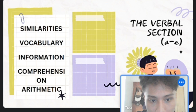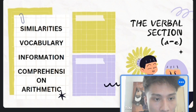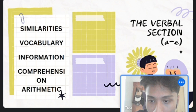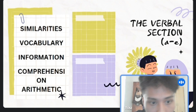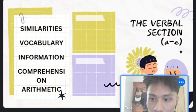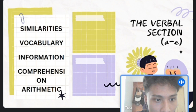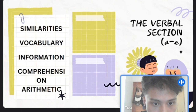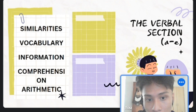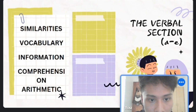The verbal section includes several subtests. Similarities measures the ability to identify commonalities between different concepts and to think abstractly. Vocabulary measures the breadth of an individual's vocabulary and their ability to define words. Information evaluates general knowledge and acquired information. Comprehension assesses the ability to understand social situations and to reason based on common sense. Arithmetic measures numerical reasoning and basic math skills.